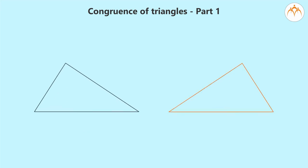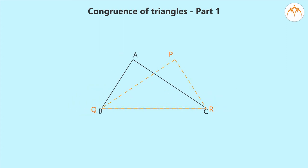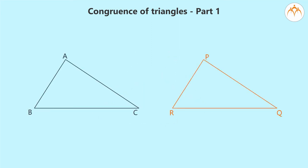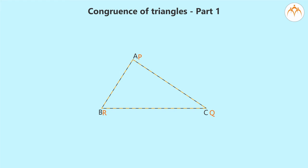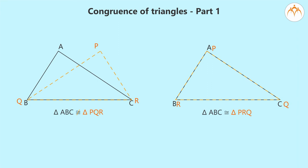Let us consider the same triangles that we used earlier. Now, let us give names to the vertices of the triangles. Let us call triangle ABC for the first triangle and triangle PQR for the second triangle. If we keep them on top of each other, then they do not coincide — that is, they do not match perfectly. We write this as triangle ABC is not congruent to triangle PQR. But if we turn triangle PQR from the back side to the front, then it will look like this. If we keep these triangles on top of one another, then they match perfectly. We write this as triangle ABC is congruent to triangle PRQ. Please understand that triangle ABC and triangle PQR are not congruent, but triangle ABC and triangle PRQ are congruent.